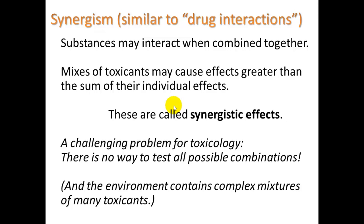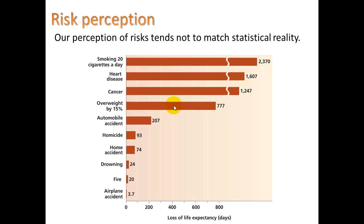The environment also contains complex mixtures of many toxicants. So a little about risk perception — the main point is that people often don't clearly perceive actual risks.